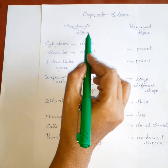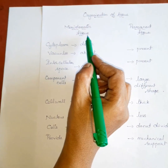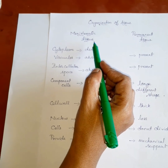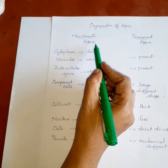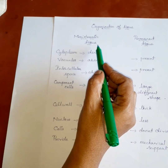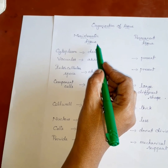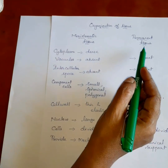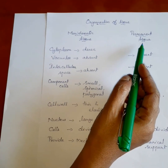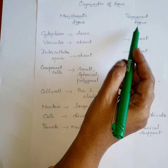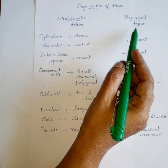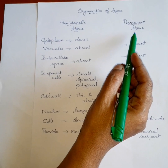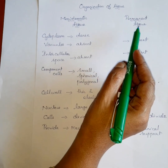What is meristematic tissue? It is a simple tissue. It divides continuously. But the permanent tissue — the tissue has stopped dividing.